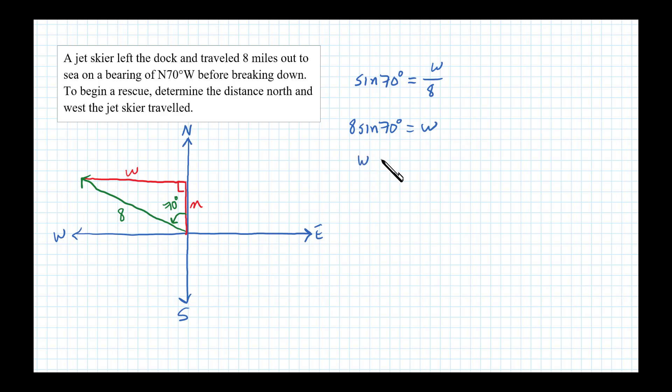Now on a calculator, the distance west is approximately equal to 7.5 miles. Now when you type that into a calculator, be sure you're in degree mode. And that's the distance west.